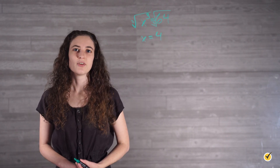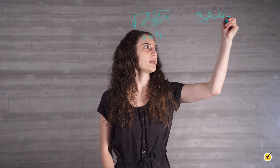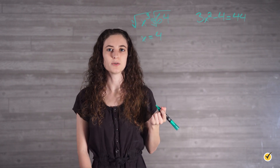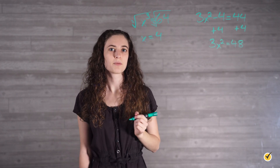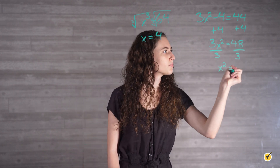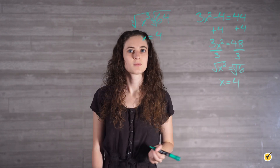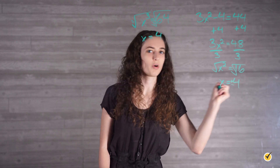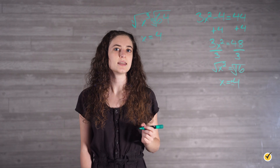Let's try one that involves a few more steps: 3x squared minus 4 equals 44. Our first step in solving this equation is adding 4 to both sides. Next, we want to get our x squared by itself, so we will divide by 3 on both sides. Finally, we want to square root both sides to get x by itself. When we do this, we get that x is not just 4, but plus or minus 4. Remember, when we have even roots, we need to consider both the positive and negative answers.